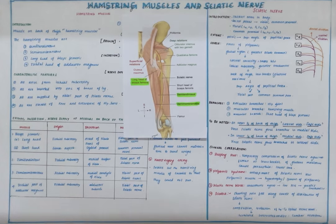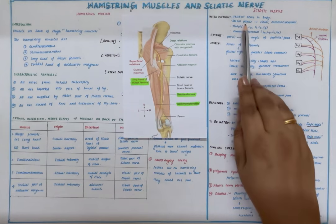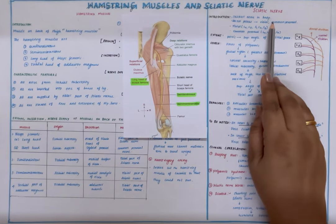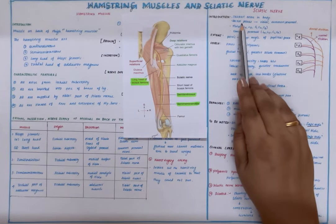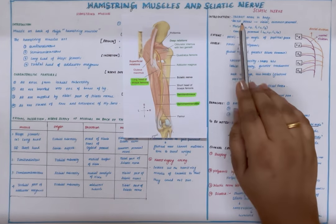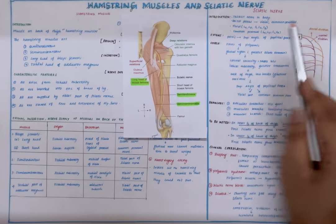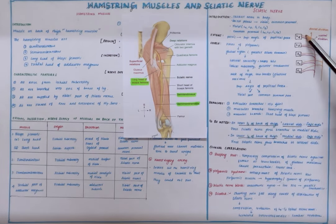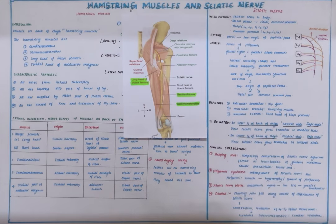Good morning everyone. In this video we will be discussing the sciatic nerve. The sciatic nerve is one of the thickest nerves in our body, arising from the lumbosacral plexus in the pelvic region. It has a root value ranging from L4 to S3, and it has two components within the same nerve: the tibial and common peroneal component.